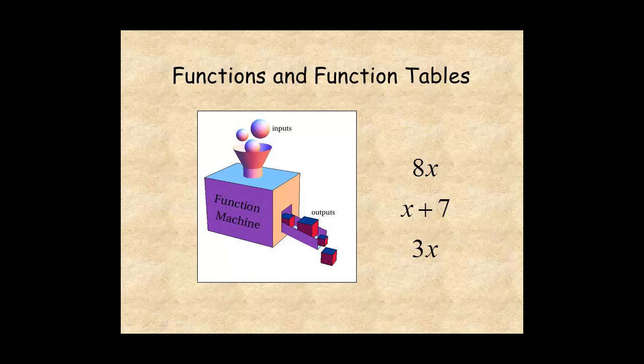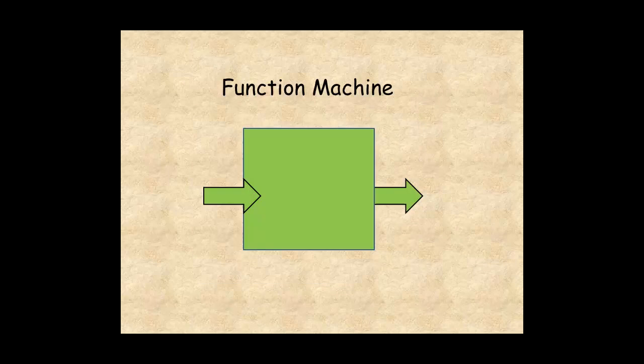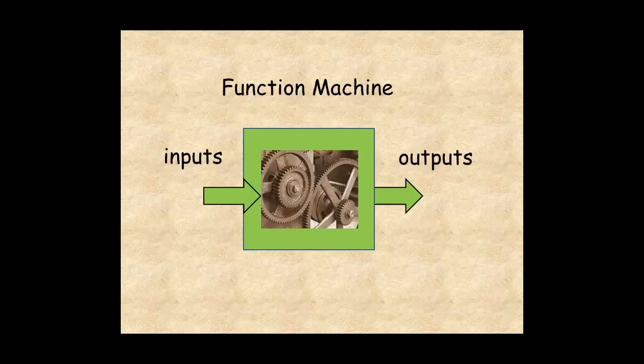This lesson helps you understand functions and function tables. A function is a relationship between two values and can be represented by a machine. The function machine has inputs, outputs, and a mechanism that defines how to turn an input into an output.